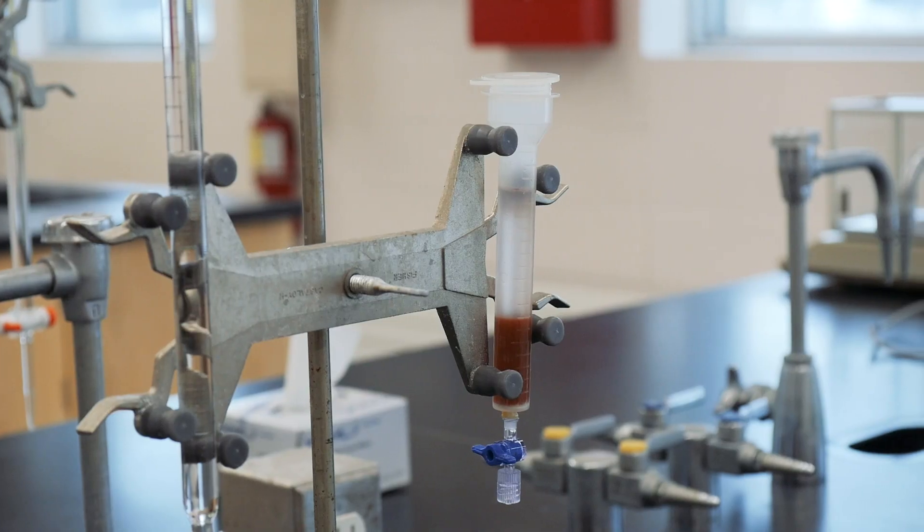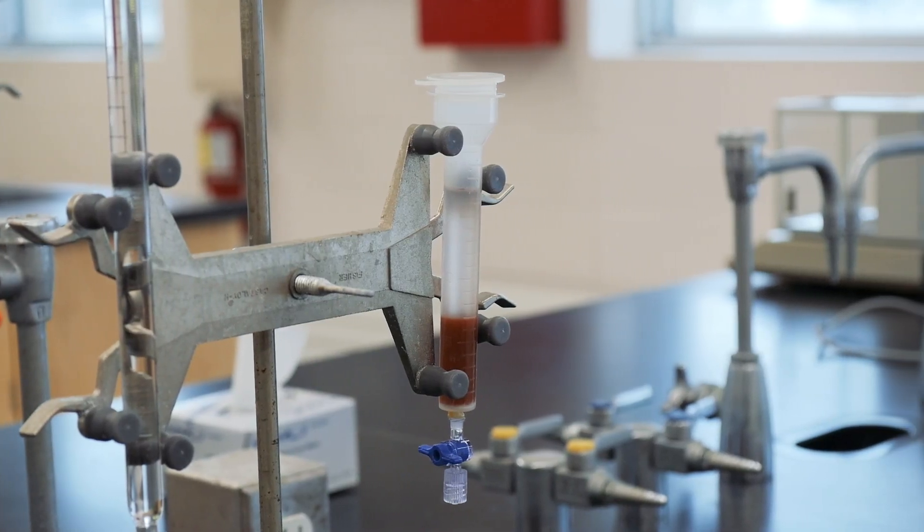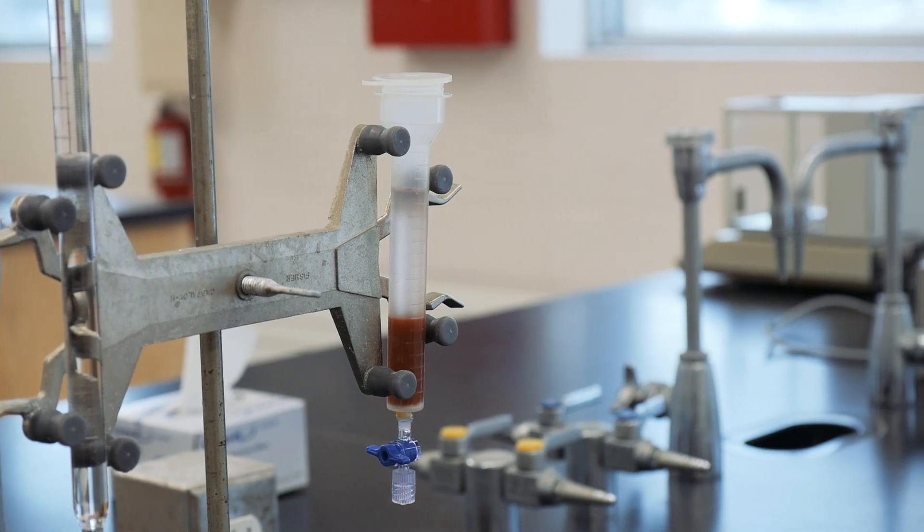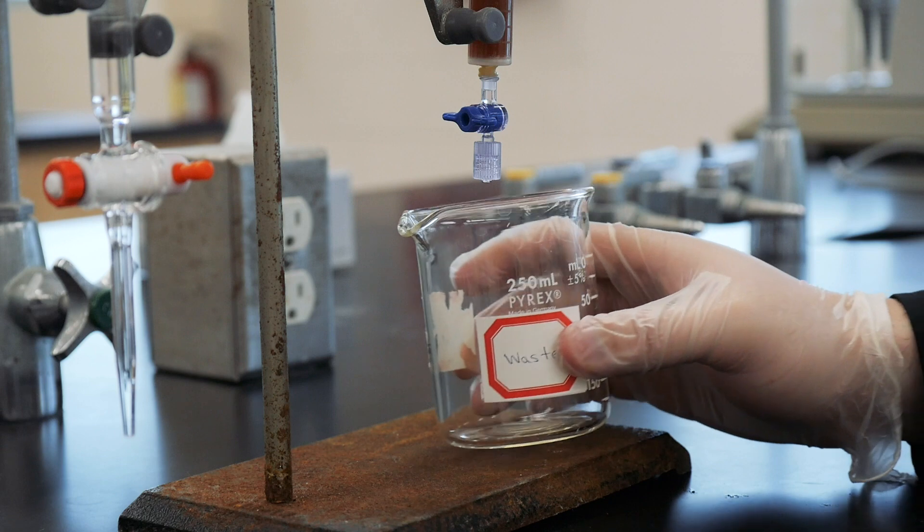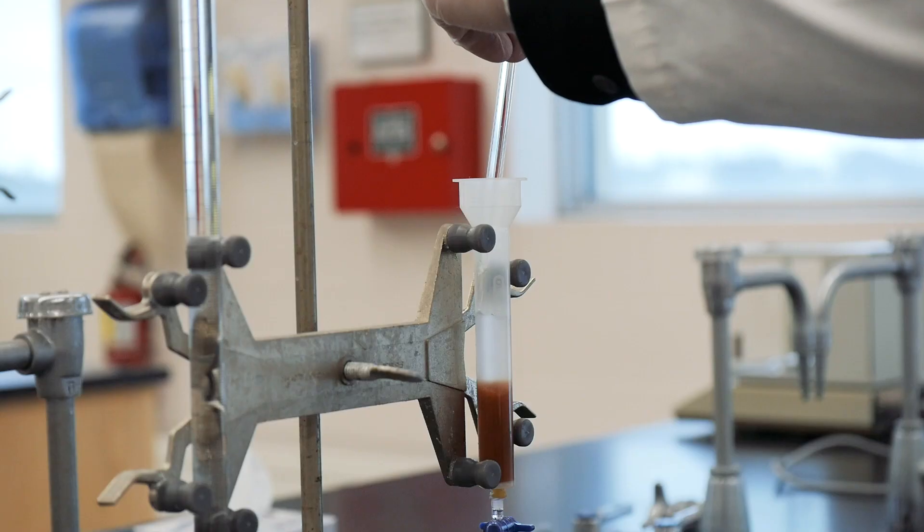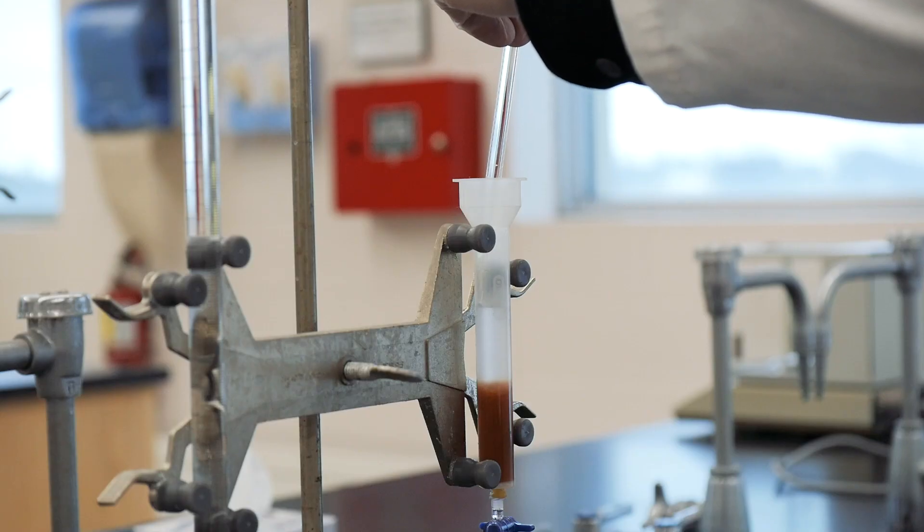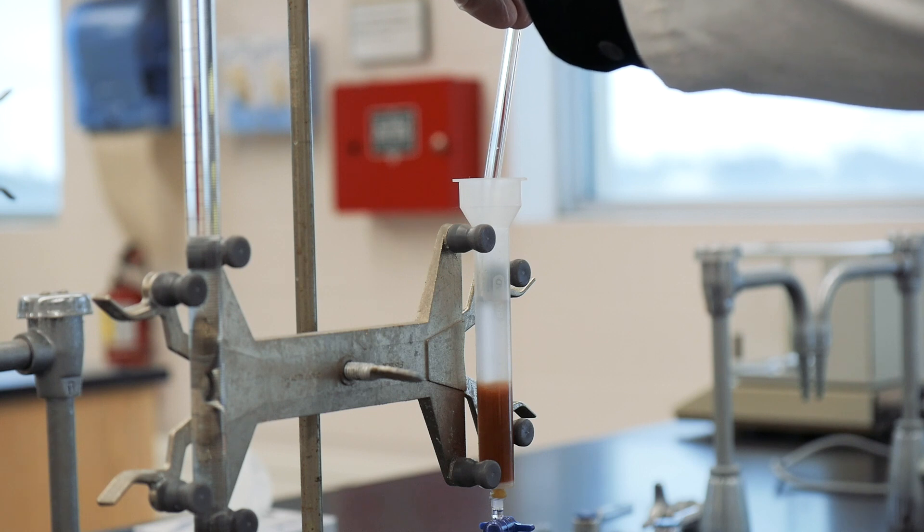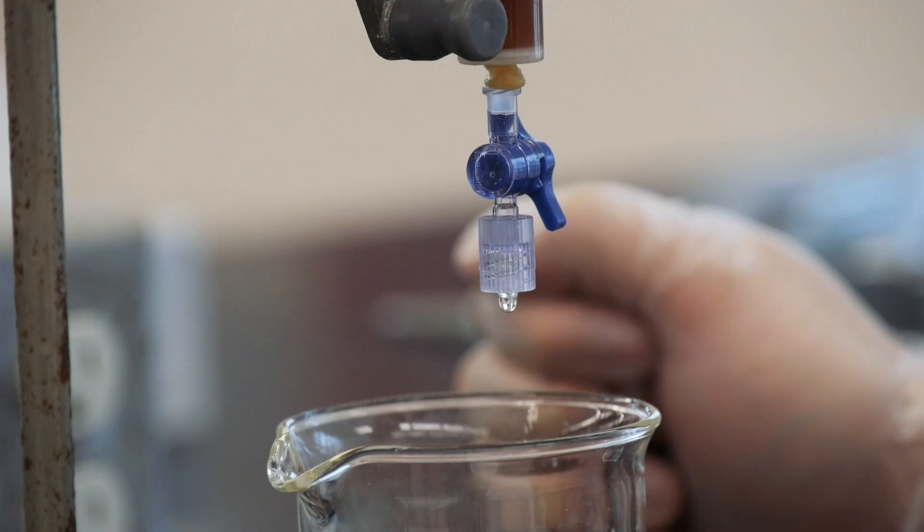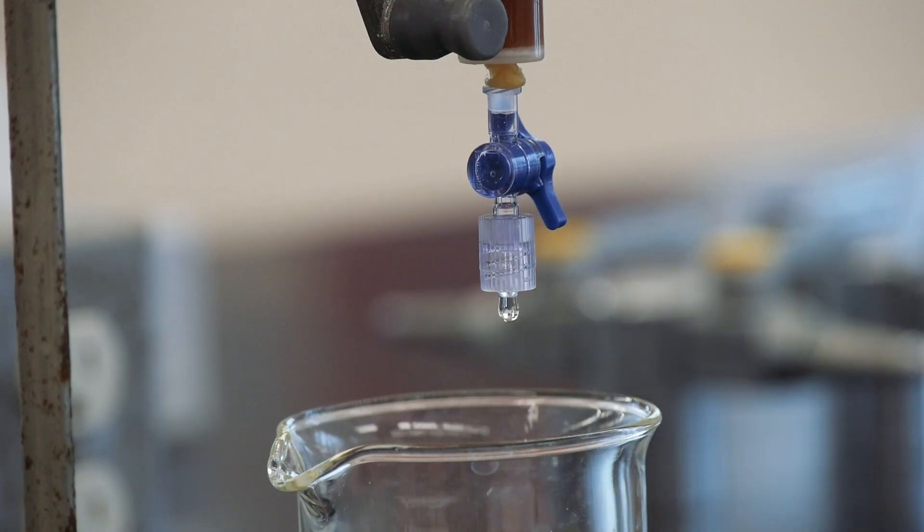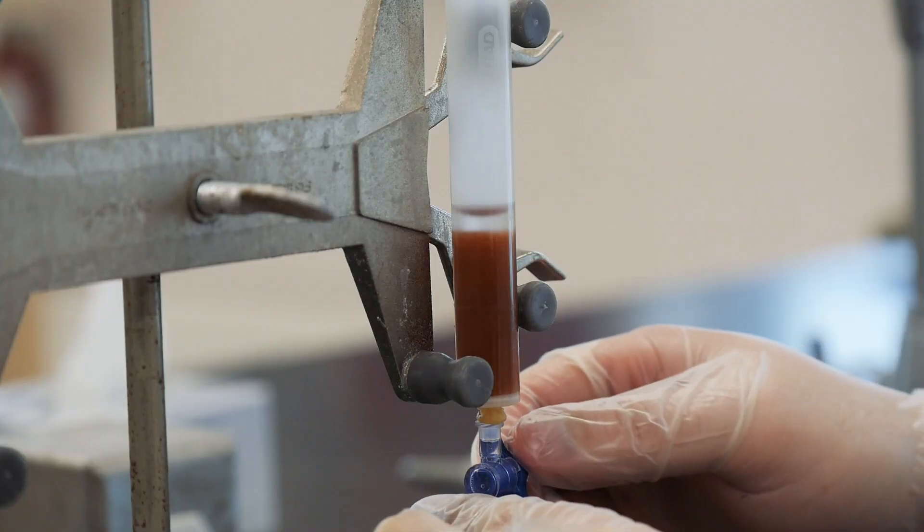An ion exchange column should already be available and attached to your stand using a burette clamp. Remove the cover from the column, place a 250 mil beaker underneath the column, and gently pour about 10 mils of 4 molar hydrochloric acid onto the column to activate the ion exchange resin. Allow the solution to run slowly onto the column at a rate of about one drop per second, allowing the liquid level to drop just above the level of the resin.